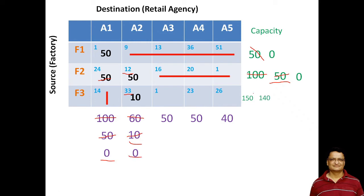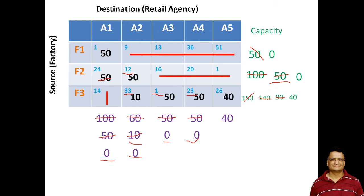Out of the remaining 3 cells, the northwest cell is F3→A3, and I can allocate 50 units, fulfilling the requirement of A3. Out of the 140 remaining, 90 will remain. Out of the next 2 cells, the northwest cell is F3→A4 and I allocate 50, fulfilling A4's requirement. Out of the 90 remaining, 40 units remain. In the last cell, the requirement is also 40 and the capacity is also 40, so all 40 units are allocated.